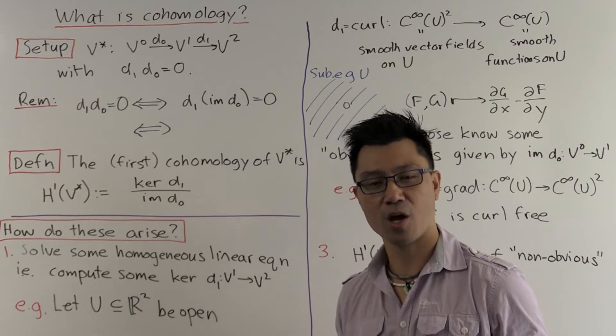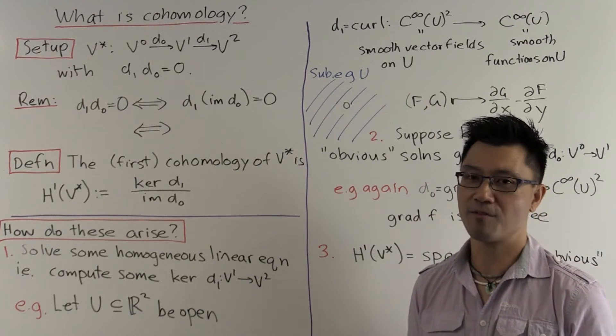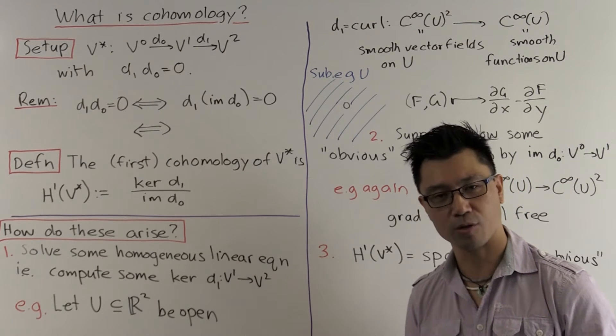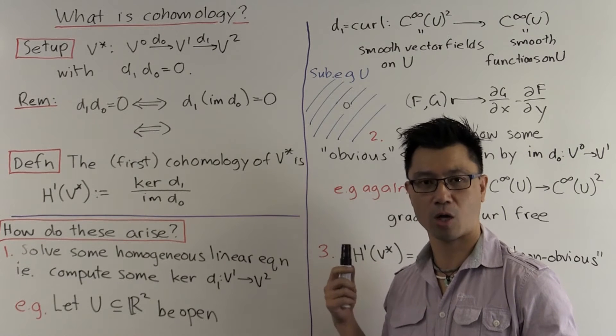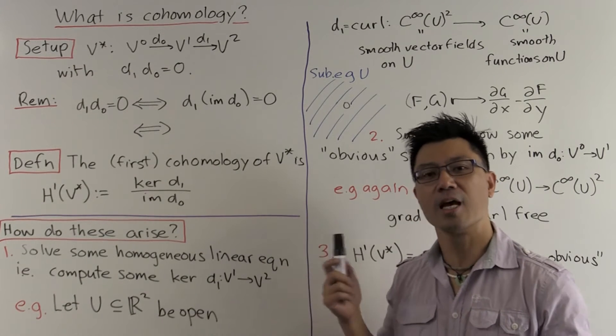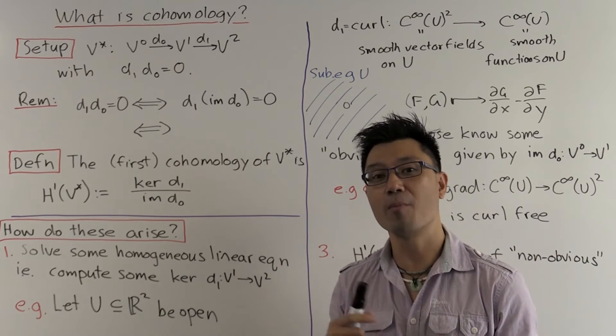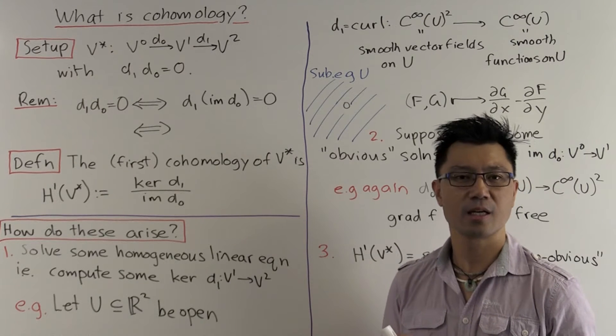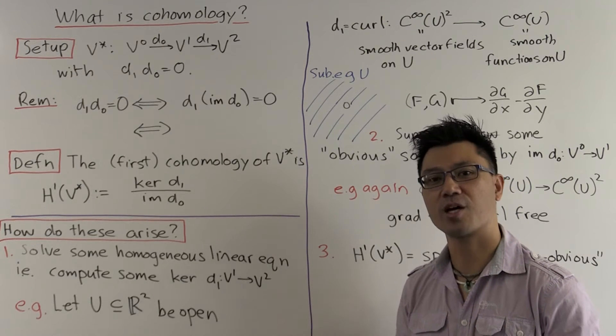In this video, what I'd like to do is to demystify a very important yet technical and abstract algebraic gadget called cohomology or sometimes called homology. This is a gadget that occurs all over mathematics and so it's used quite a lot, and yet it's quite difficult for students to understand.